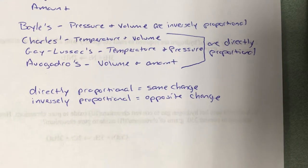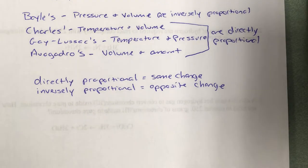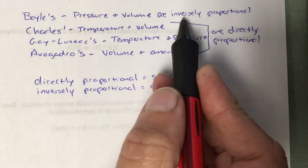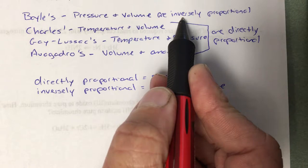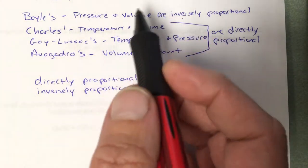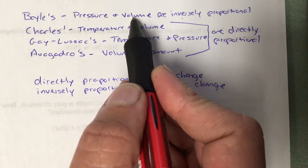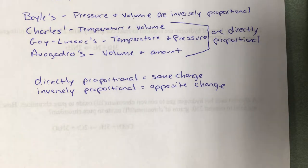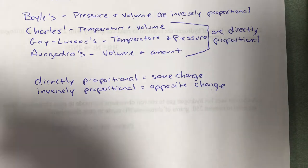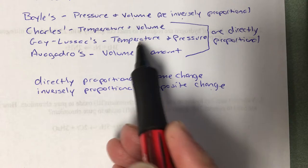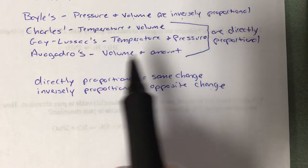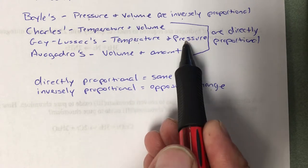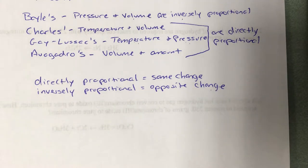This allows us to make some predictions about gas behavior. If I double the volume of a gas and want to know what happens to pressure — since it's inversely proportional and amount and temperature are constant — doubling the volume should cut the pressure in half. If I double the temperature and want to know what happens to pressure, provided volume and amount are constant, I would double the pressure, because temperature and pressure are directly proportional. They change in the same way.